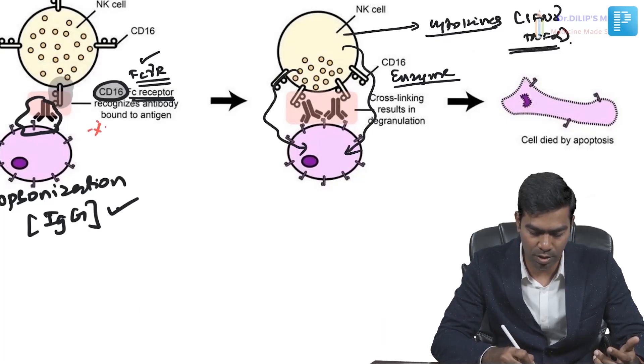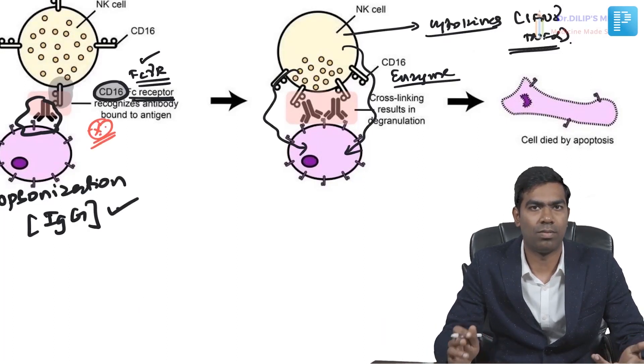The two principal mechanisms by which NK cells kill are: identifying cells with reduced MHC class 1 expression, and identifying cells coated with antibodies (ADCC). CD16 is a very important exam question — it is the receptor responsible for recognizing antibody-coated cells in ADCC.